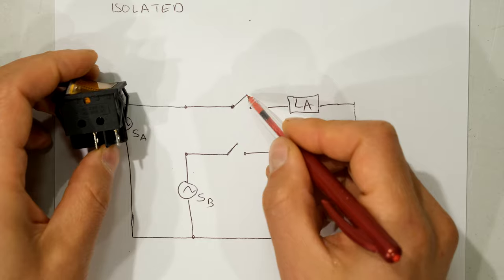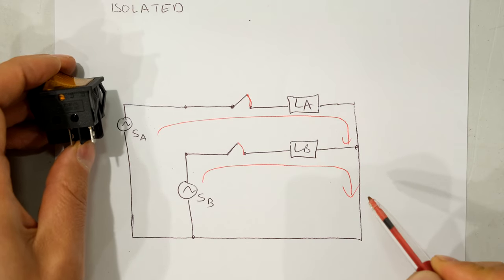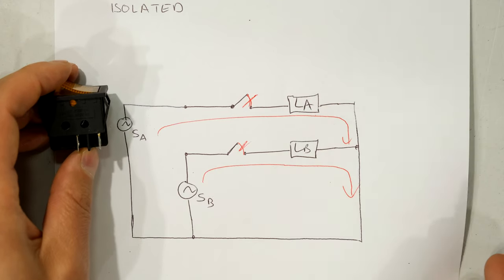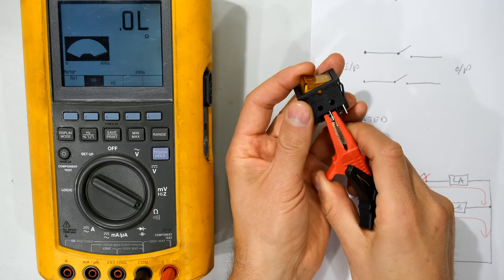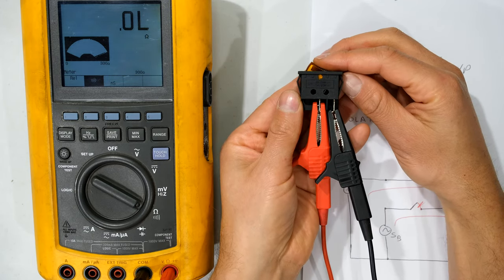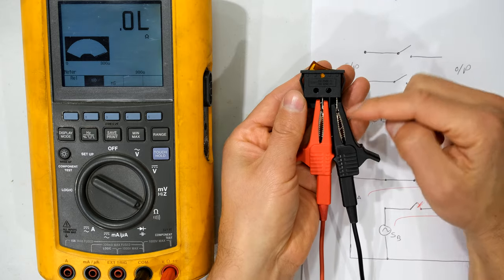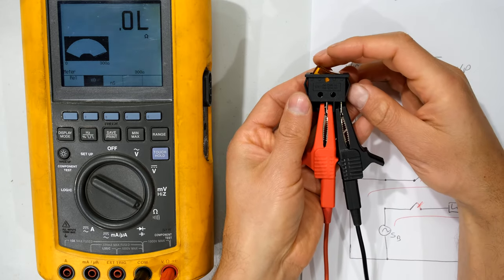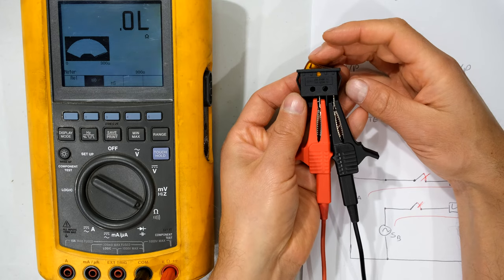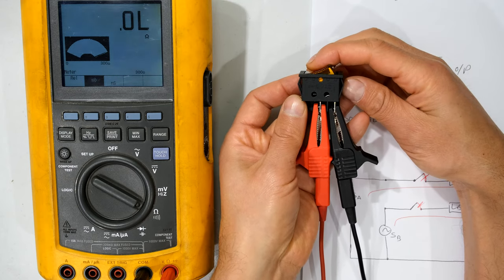When I close the switch, both links close allowing current to flow in load A and current flowing in load B. When I open the link, no current flows in either A or B. I'm going to put my one crocodile lead there and my other crocodile lead there. Notice the buzzer has not sounded so the resistance is considered open circuit. When I depress the switch, notice it becomes a short circuit. I've got the input lead and the output lead; currently open circuit. As I close the switch, the buzzer sounds and the resistance is now very low.